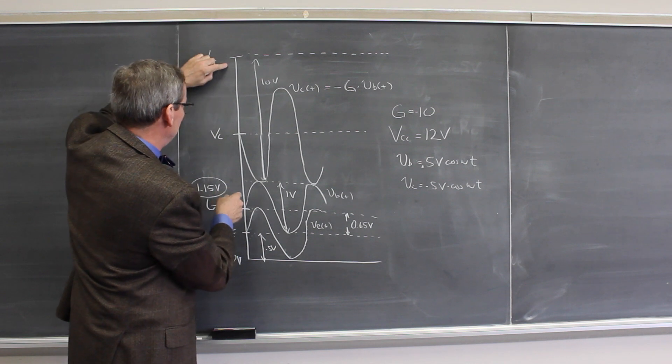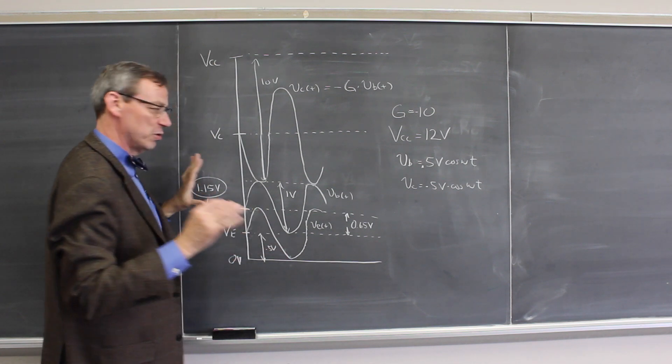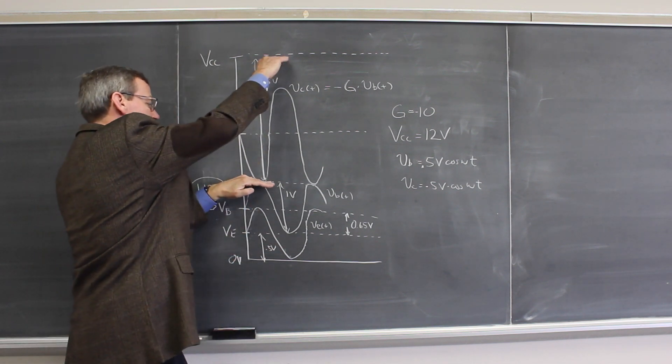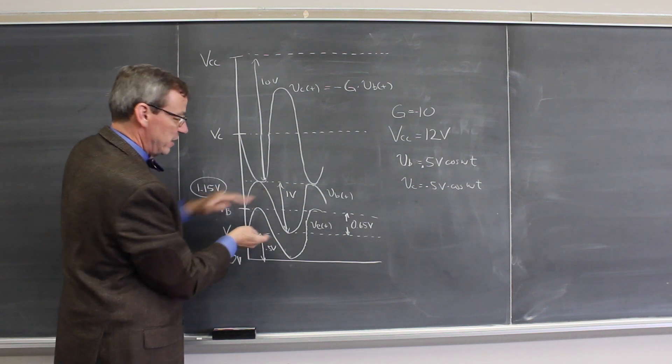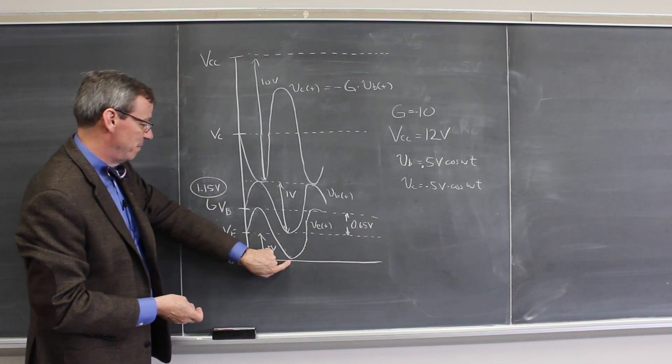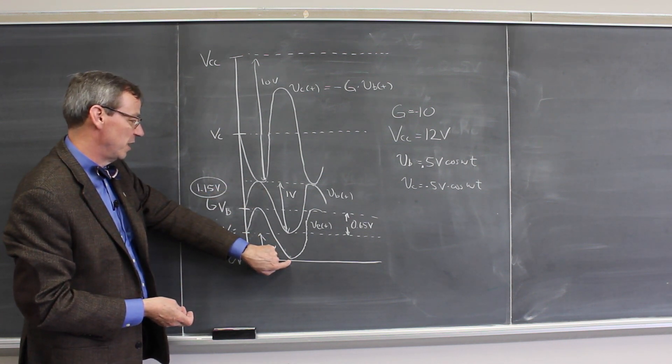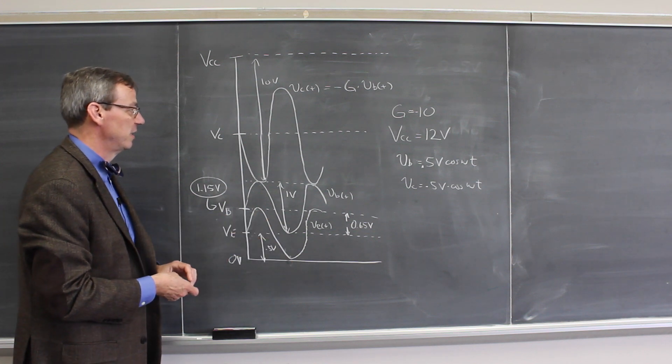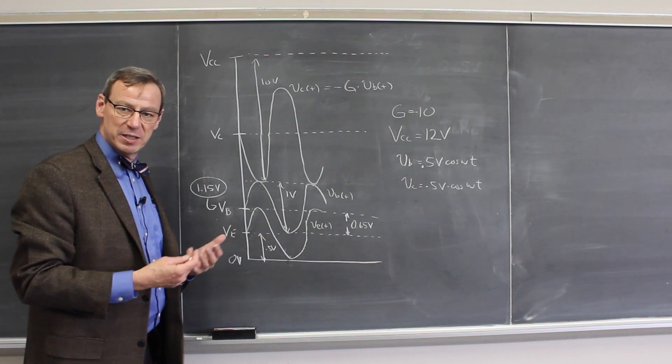So we're trying to set the collector voltage to sort of center it between here and here. So that's sort of the picture we're after. We're looking for a lot of range here and squeeze this as much as we can, but make sure that the emitter signal does not drop below zero so we clip things. So that's what we would do to set up this amplifier.